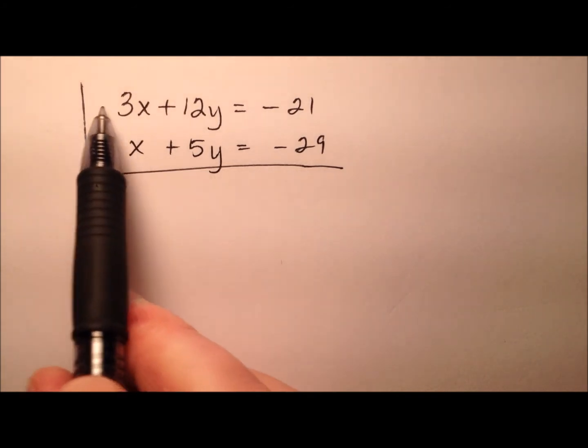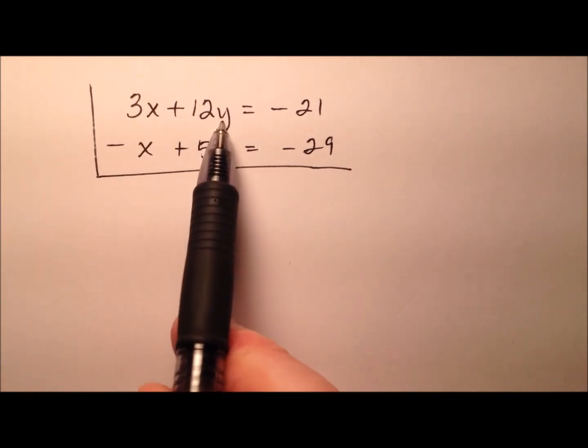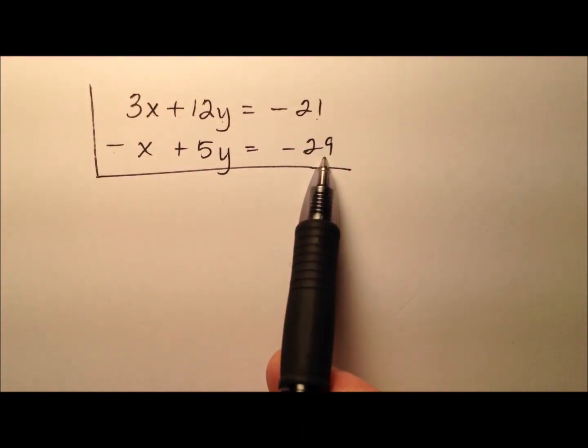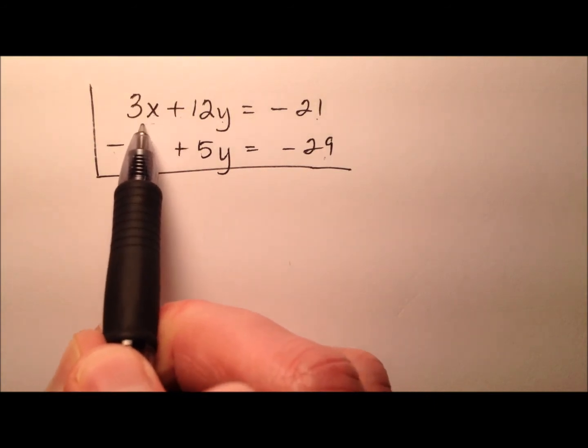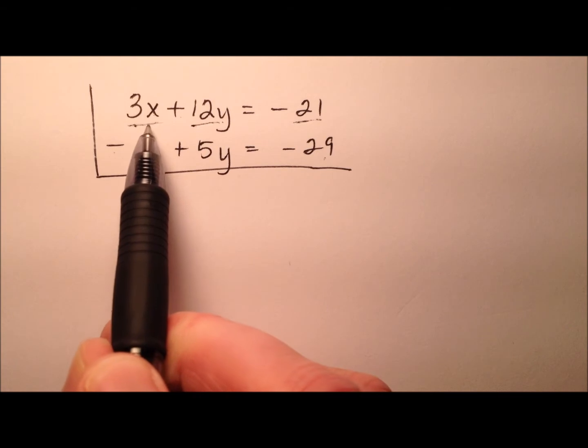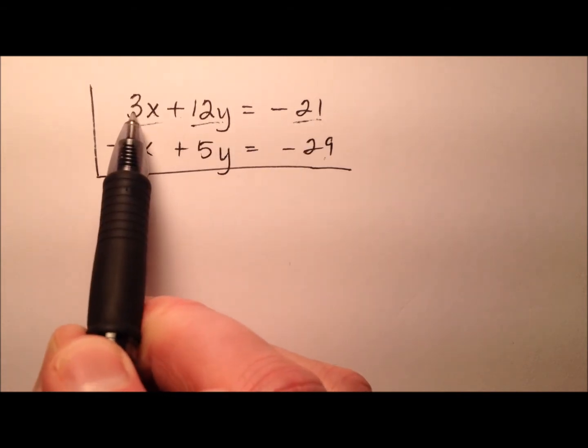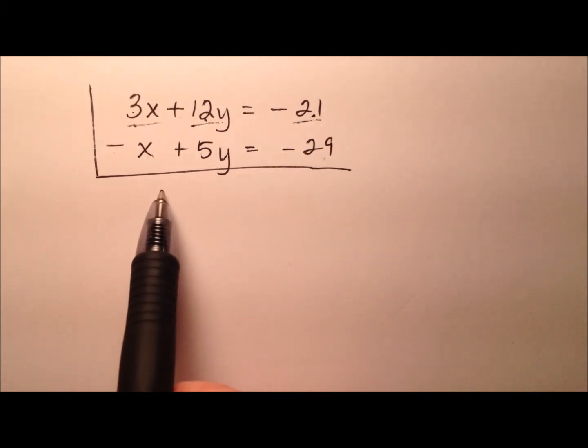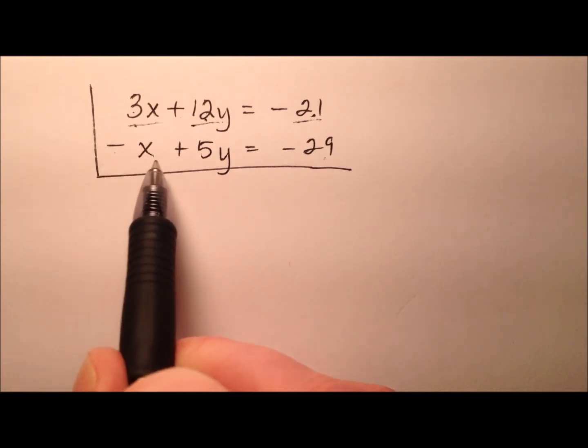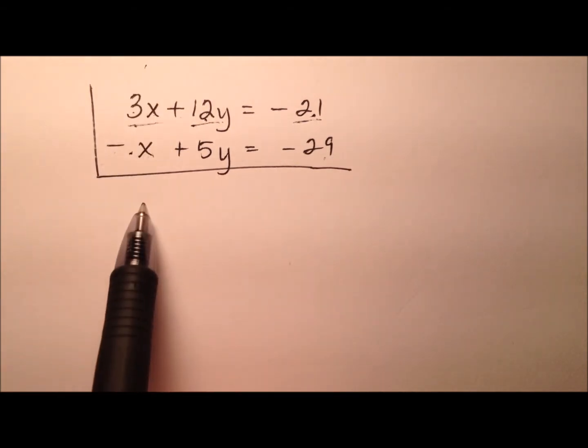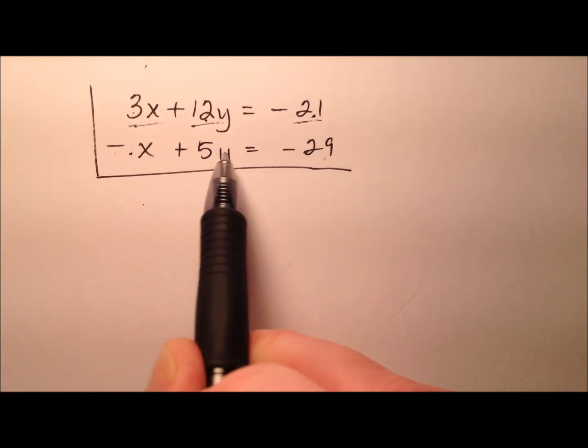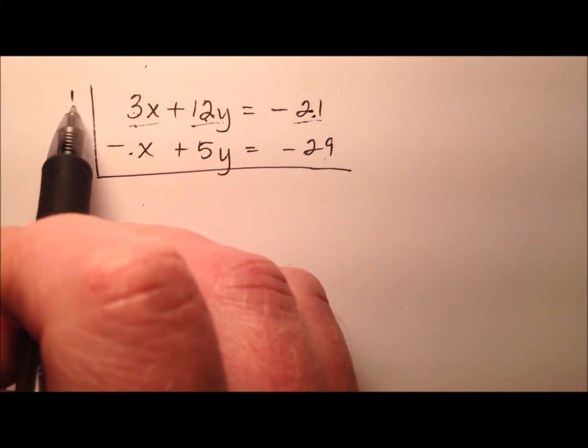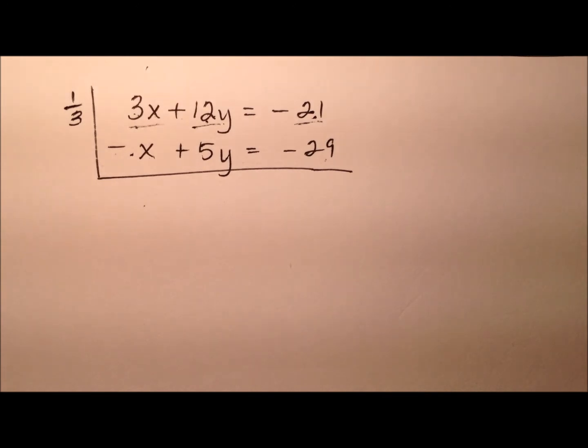In this second example, let's look at our two equations. I have 3x plus 12y equals negative 21 and negative x plus 5y equals negative 29. Something that's interesting I notice in this top equation is that all these values are multiples of 3: 3x, 12y, negative 21. So if you were to look at this outright, you might be inclined just to multiply the bottom equation by 3 to eliminate the x's. But instead of multiplying and making all these numbers even bigger, I can actually divide them all by 3 or multiply them by 1 third.